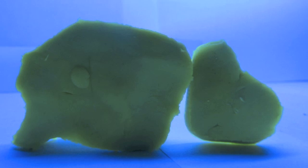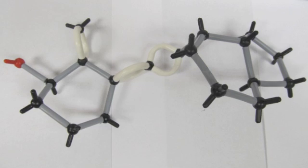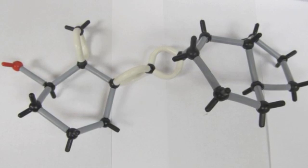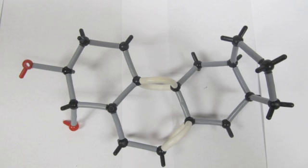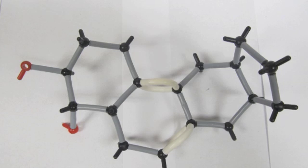The liver adds a hydroxyl or a hydrogen and oxygen group to the vitamin D3. Here is the vitamin D3 before the hydroxyl group is added. And here is after the hydroxyl group is added to form calcidiol.